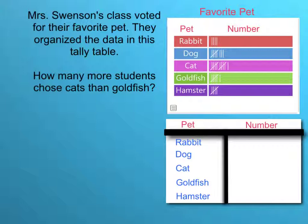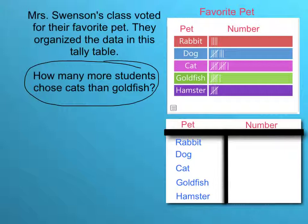So what's the first thing we need to do? We need to figure out what it's asking. The question is asking us how many more students chose cats than goldfish. Well, when I look at the tallies, I have to sit here and count one, two, three, four, five, six, seven, eight — I'm going to have to keep counting one by one. That's just not practical. So I'm going to use the tally marks and create my own frequency table.